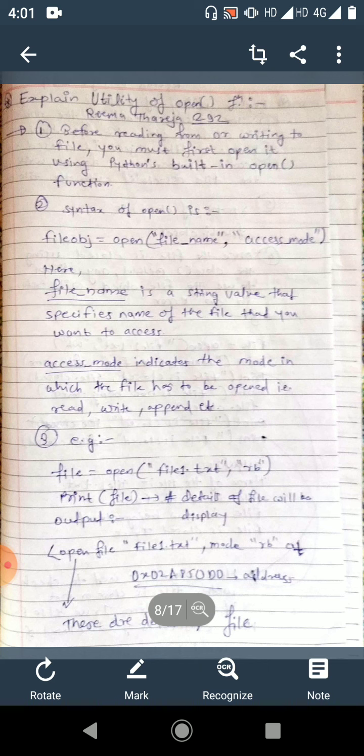For example, file equals open file one dot txt rb. In the next line we have written print in bracket file, so details of the file will be displayed. The output is: open file file one dot txt mode rb at some address. These are the details of the file. Here we know how to open a file: file equals open in bracket file name comma rb. Here the access mode is rb, that is reading a file in binary format.